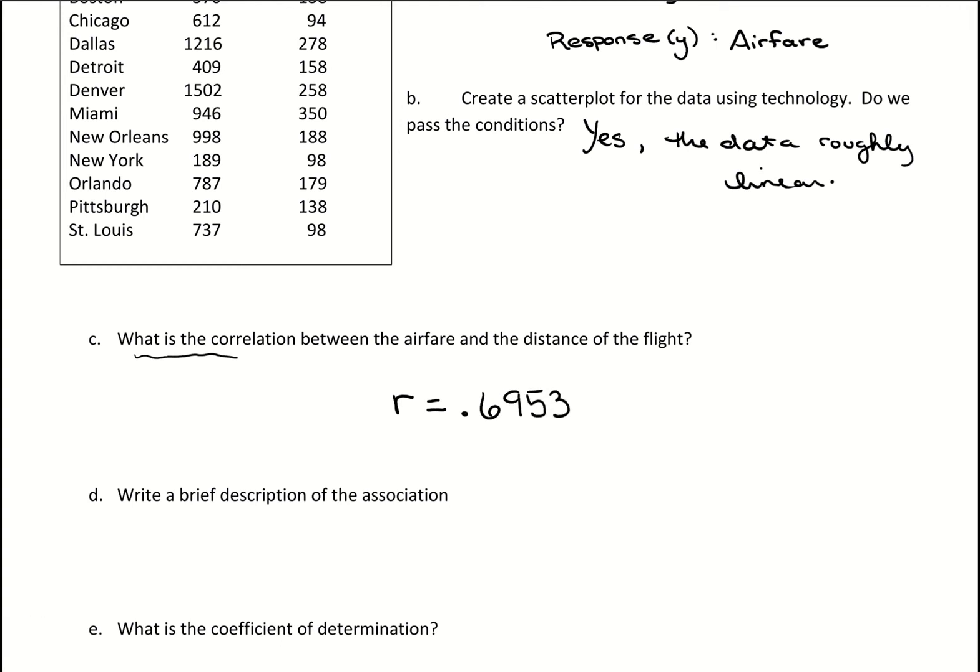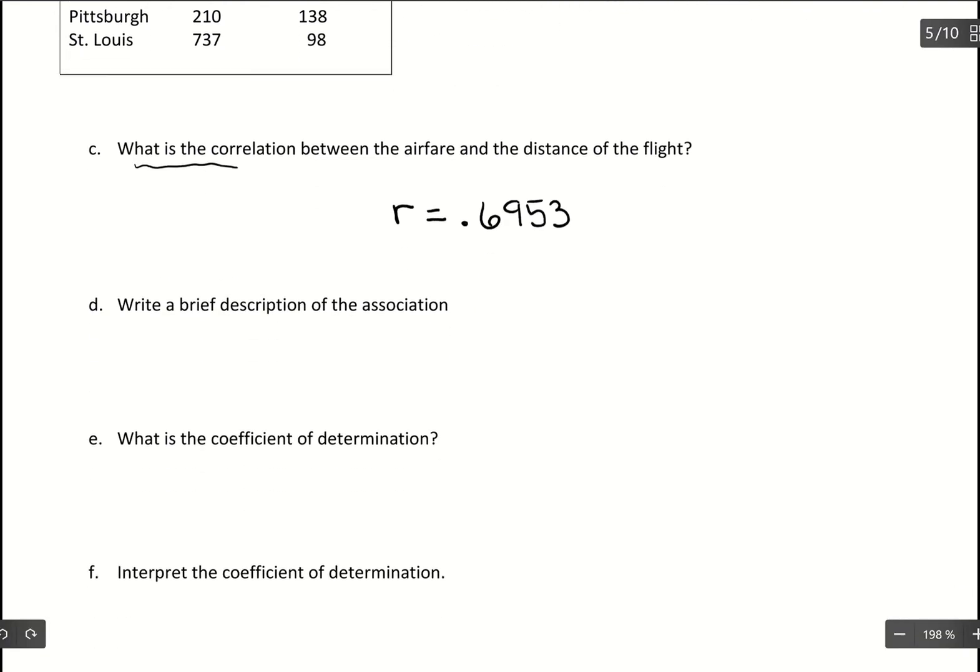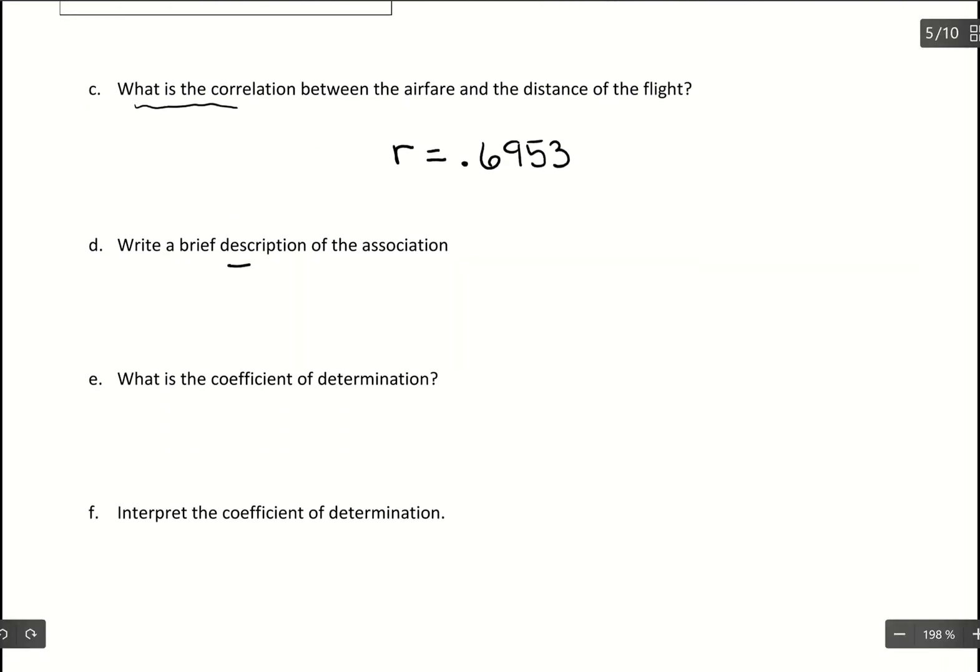So there's our correlation. And then with that, we want to write a brief description of the association. So we're going to describe the association between airfare and distance of the flight.